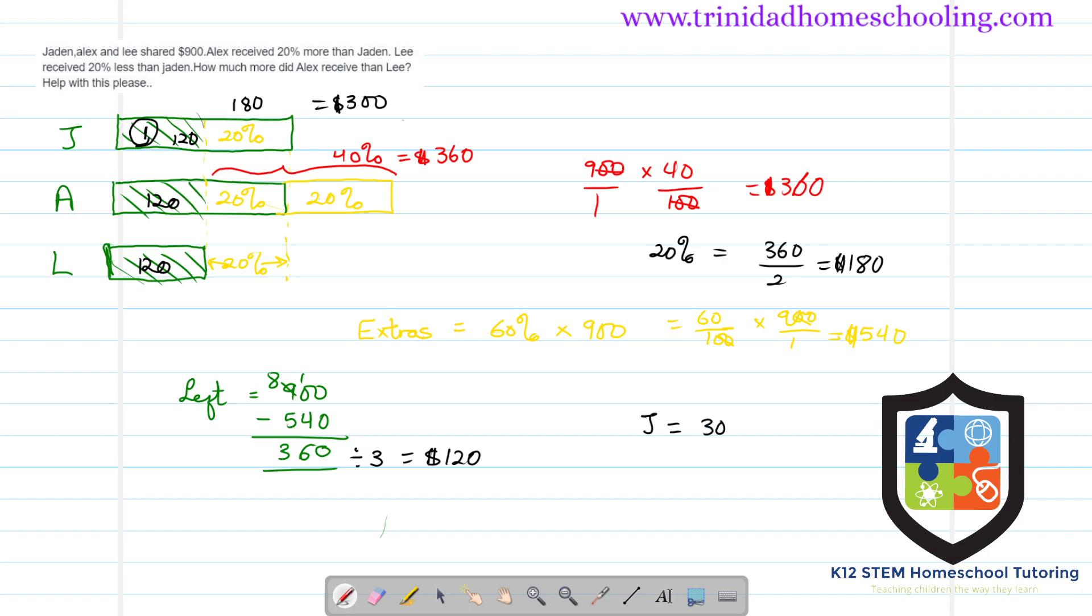So Jayden has $300. Alex has 120 plus the 360, so 120 plus the 360 will give us $480. So Alex has a total amount of $480.